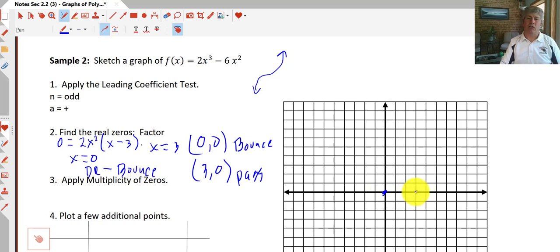Now we know our end behavior. Looking at our sketch up here, we know that the graph, all the x's to the right of 3, have to be above the x-axis, and are going to head towards positive infinity. And we know everything to the left of 0 is going to be, since we're bouncing off 0, is going to head back down in the negative direction.